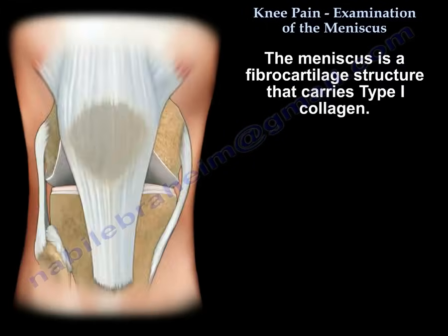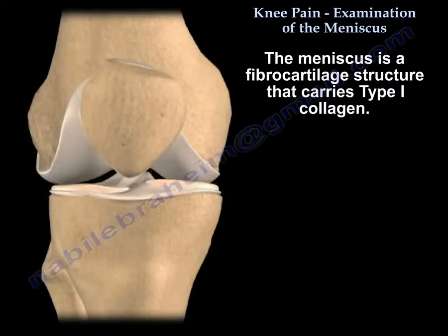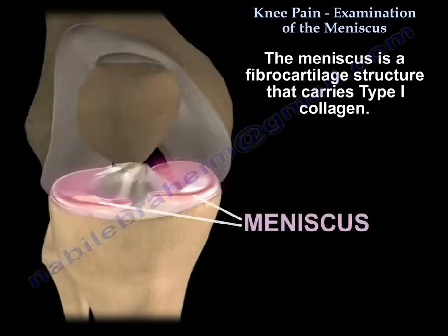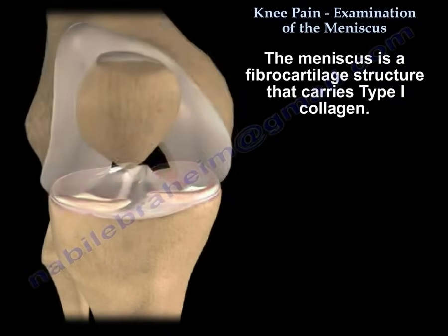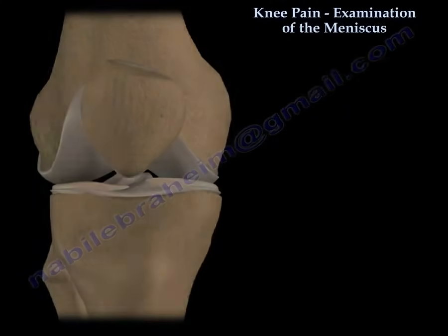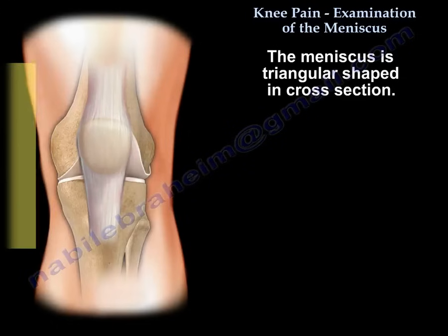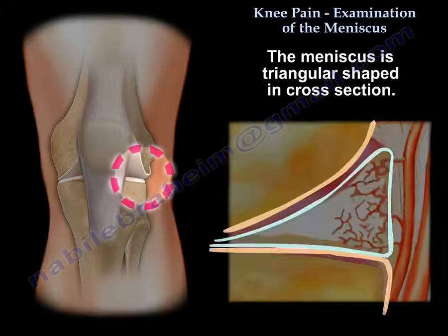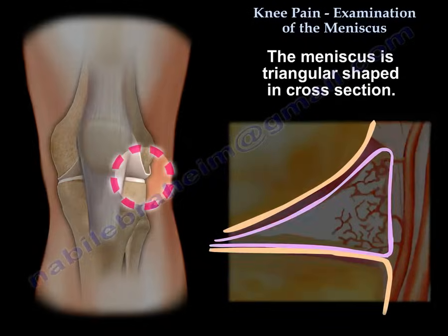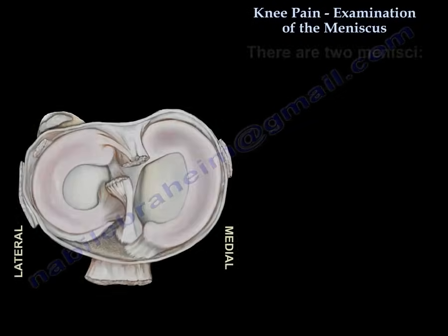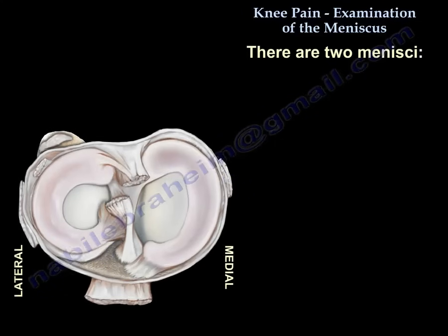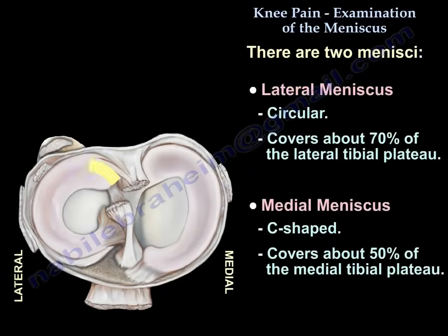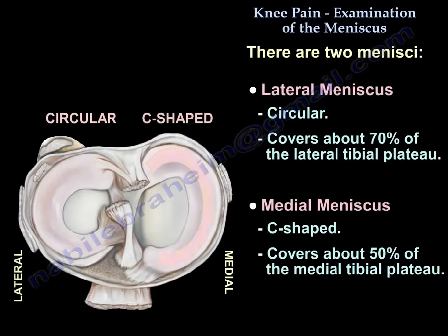The meniscus is a fibrocartilage structure. The meniscus carries type 1 collagen. It is triangular in cross section. There are two menisci. The lateral is circular and covers about 70 percent of the lateral tibial plateau. The medial is C-shaped.